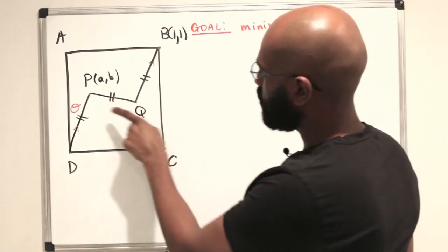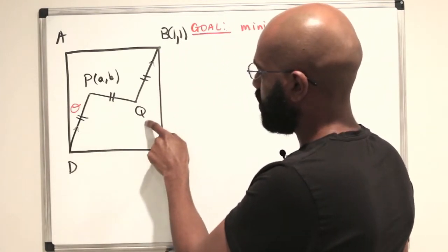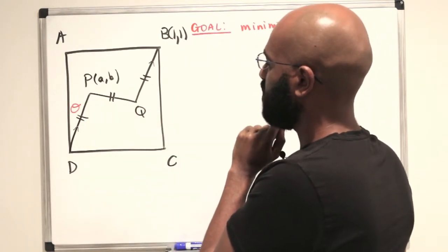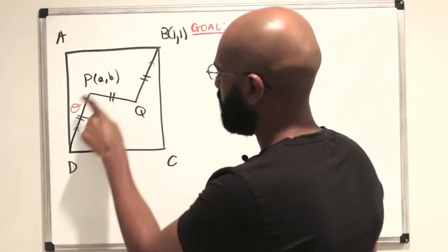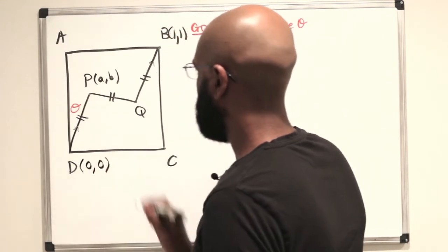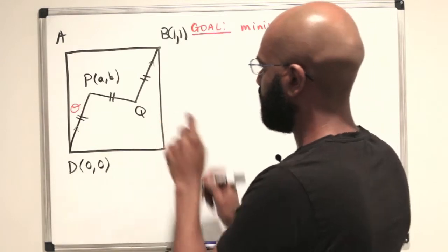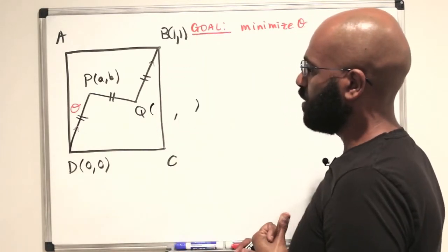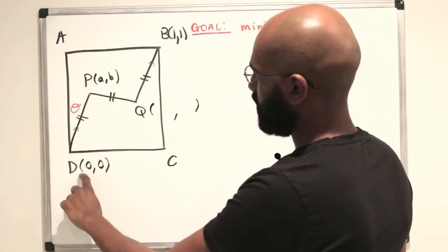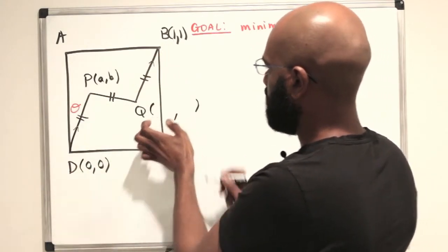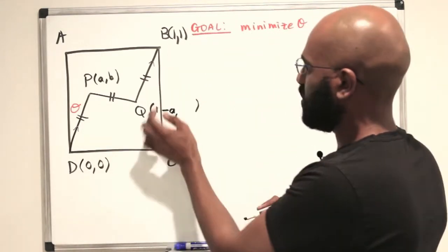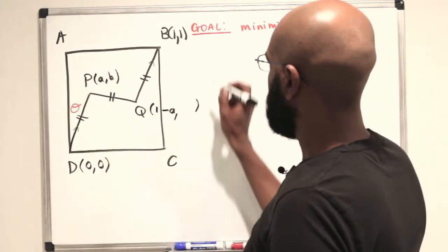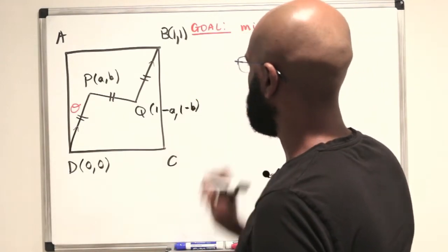Given that the slope from P to D is the same as the slope from B to Q — because these two line segments are parallel — and at the same time they have the same length, the difference in x-coordinates of these two points should equal the difference of the other two, and similarly for y-coordinates. Making D the origin, the difference here is A minus 0. The difference for Q's x-coordinate gives 1 minus A, and by similar reasoning the y-coordinate of Q is 1 minus B.